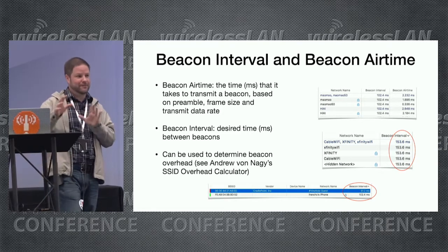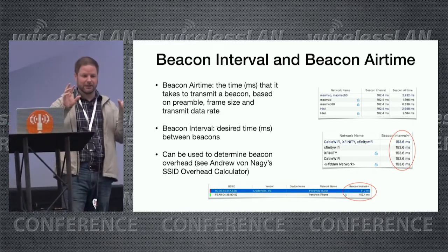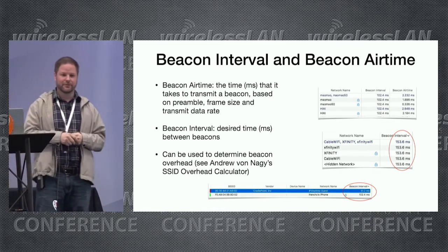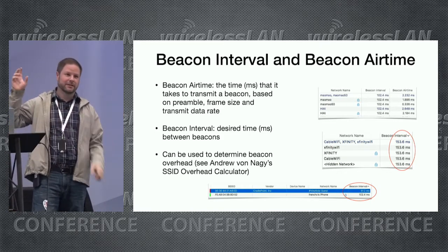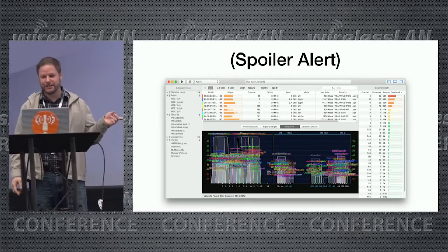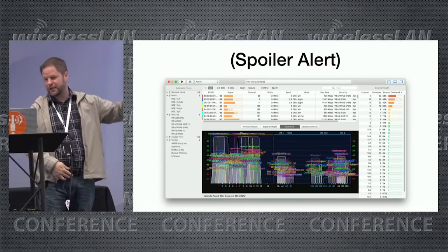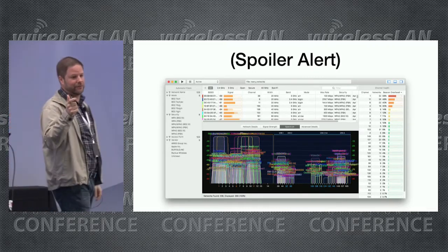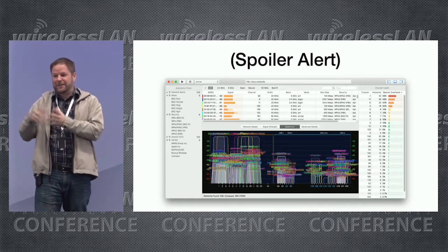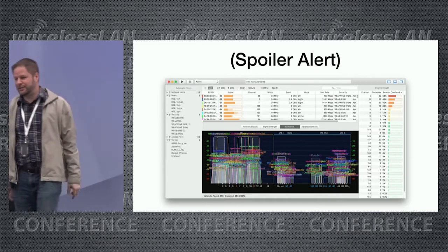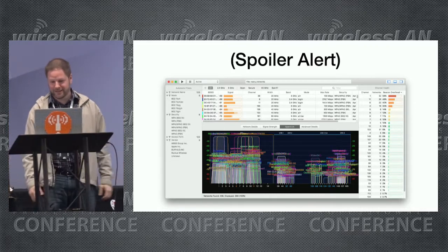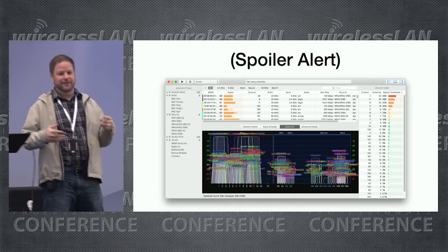The idea behind beacon airtime was to compute beacon overhead. You may have seen Andrew's SSID overhead calculator — he has a calculator to estimate overhead based on number of APs, beacon size, data rates, and so on. What I'm doing — and this is something I'm including in the next update — is showing on the right side the list of channels, the number of networks on each channel, and the beacon overhead per channel. In this lab environment scan, for example, channel 1 has 58% beacon overhead, meaning 58% of airtime is used just transmitting beacons.